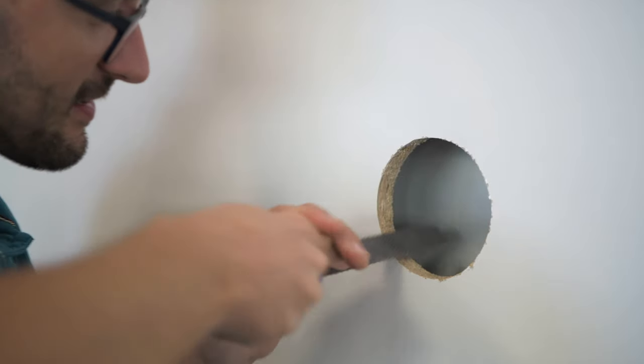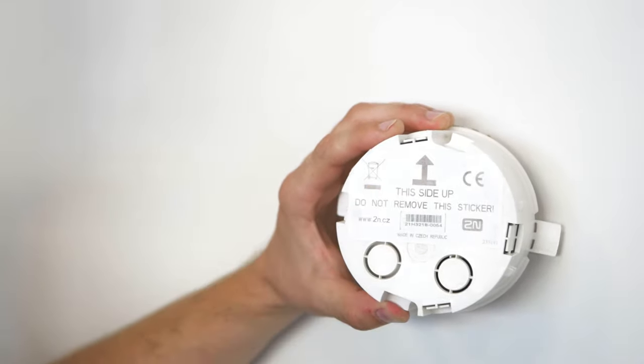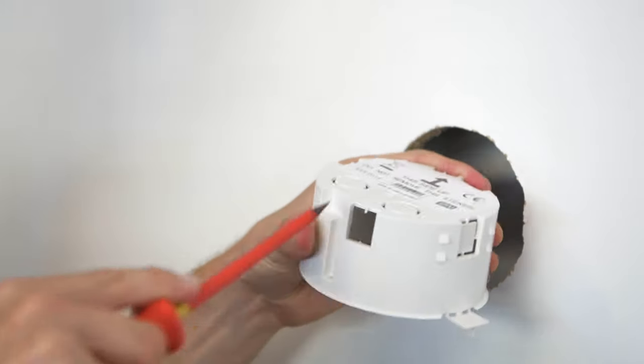If necessary, file the hole so that the box fits snugly. Again, make sure the box is oriented properly and make a hole for the cabling.